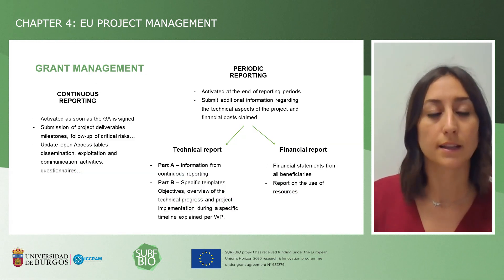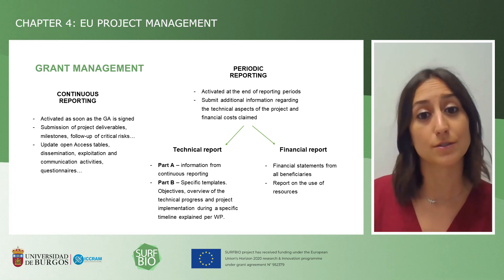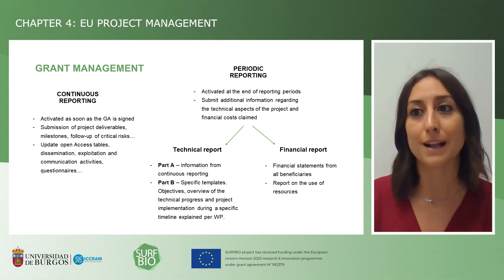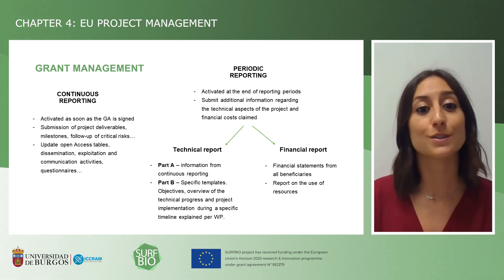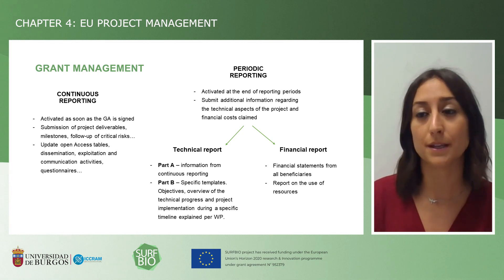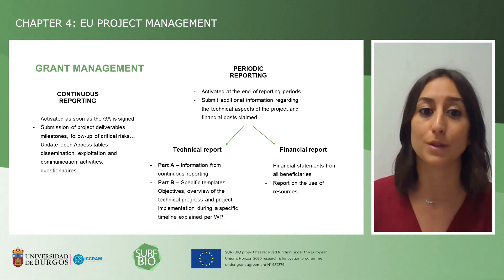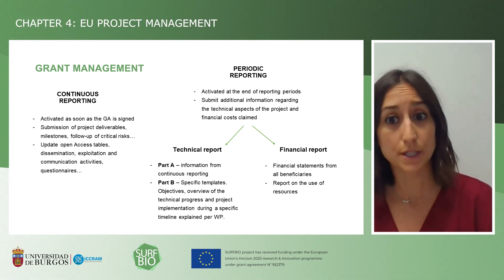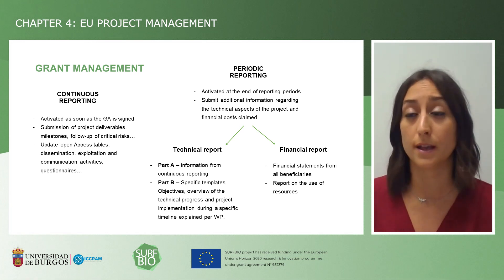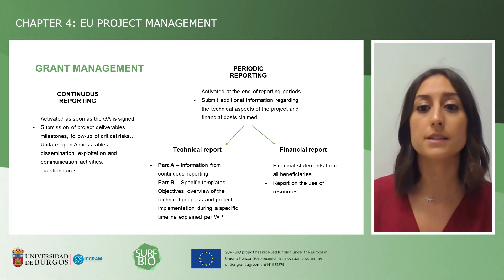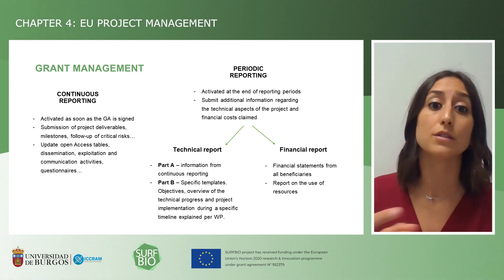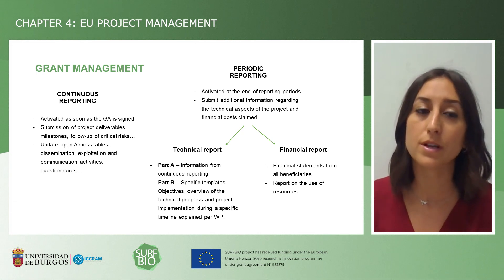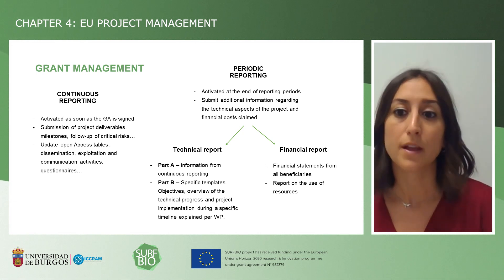In more detail: continuous reporting is activated as soon as the grant agreement is signed. Here you need to submit periodic deliverables, milestones, follow-up of critical risks. It is also used to update open access tables, dissemination, exploitation and communication activities, as well as questionnaires. However, periodic reporting is activated only at the end of a reporting period and is used to submit additional information not submitted in continuous reporting — about technical aspects of the project and financial costs that have to be claimed.